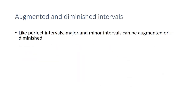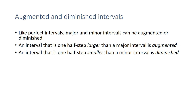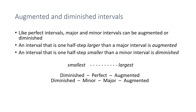Like perfect intervals, these can also be augmented or diminished. If I take a major interval and make it a half step larger, it is augmented. If I take a minor interval and make it a half step smaller, it becomes diminished. Here's a chart showing all the sizes and how they relate: starting from diminished, then minor, then major, then augmented — or for perfect intervals, diminished, perfect, augmented.